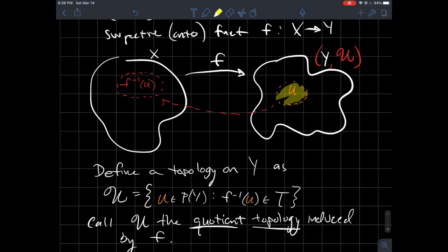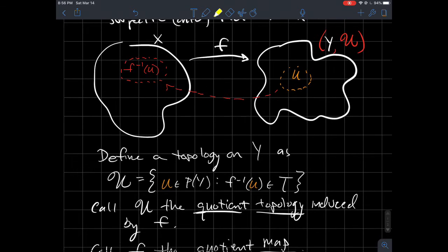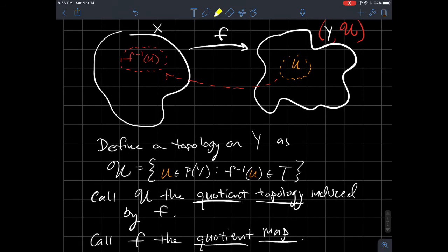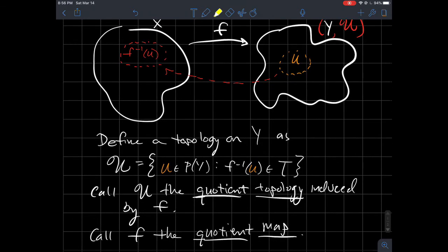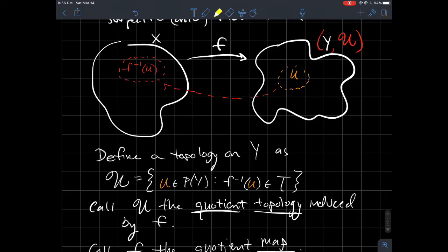Now what are some consequences of this? Some more vocabulary for us: we'll say that fancy U is the quotient topology, and then we'll say that f, that function, we'll call it a quotient map. Now some consequences of this, maybe to remind you of the concept of continuity that we've talked about quite a bit in this class.